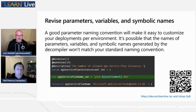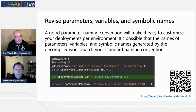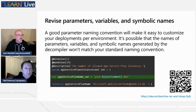Revising parameters, variables, and symbolic names: in the converted file, some parameter names and variable names look a little strange. In the export and decompilation process, a variable for app service plan name ends up being 'appServicePlanName_var' — we want to clean that up. One of the goals here is to make these templates reusable by other members on our team and for other environments. We talked about this process in episode eight of our series, so there's a QR code and link if you want to go back and watch that.